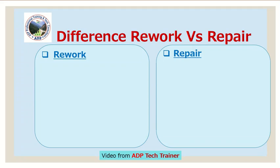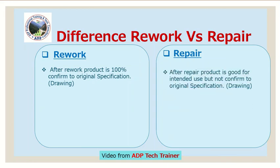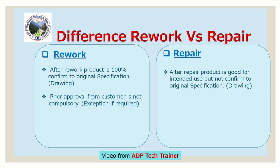Difference between rework and repair. After rework, the product is 100% confirmed to original specification. After repair, the product is good for intended use but not confirmed to original specification. For rework, prior approval from the customer is not compulsory, with some exceptions if required. For repair, you must take approval or deviation from the customer prior to starting repair work.